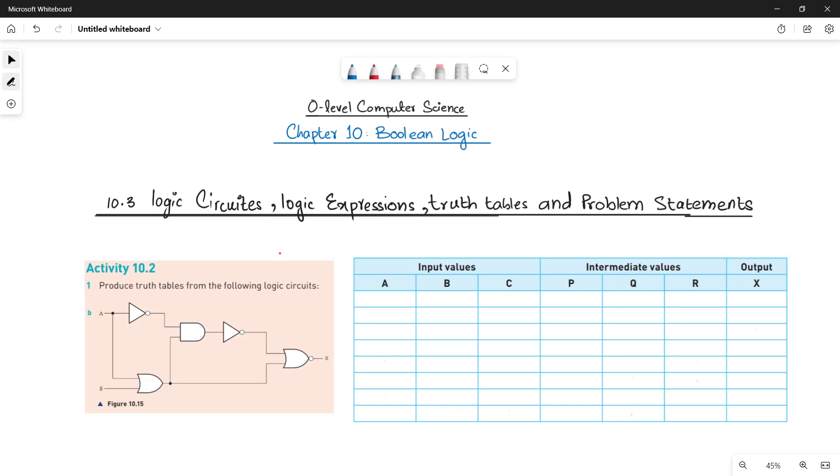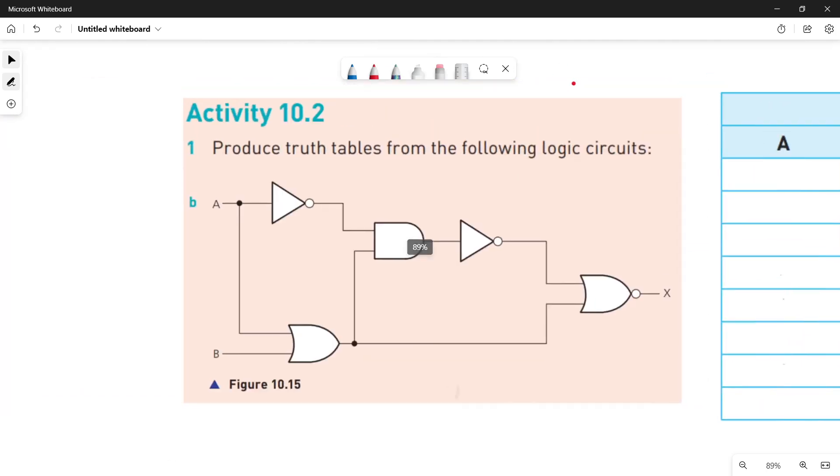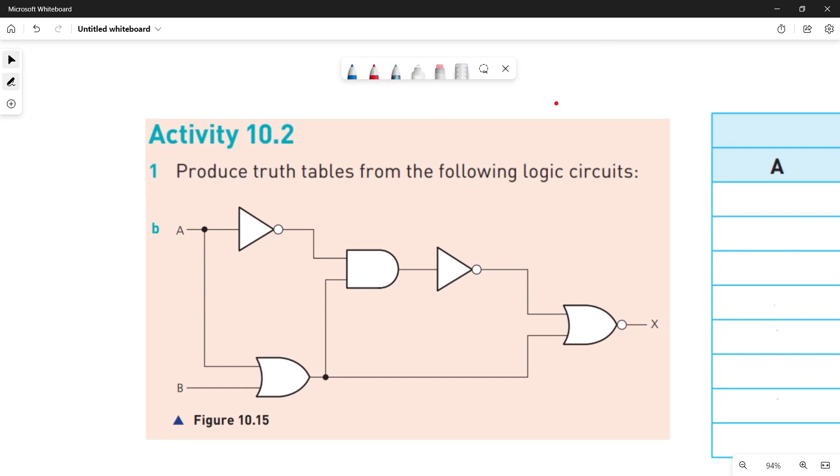In part B, we have a logic circuit and we need to fill the truth table according to that. So look at the logic circuit first. In the logic circuit, let's see how many logic gates we have and what are their inputs and outputs.